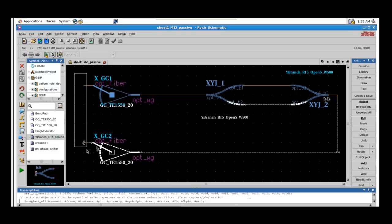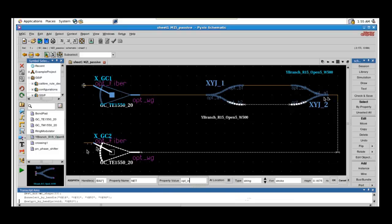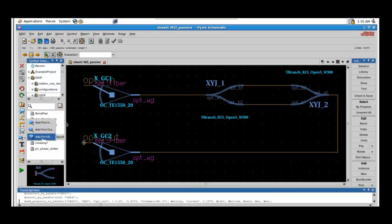Once the components are connected, we can label the input and output nets. We'll also add ports to provide connectivity for hierarchical designs.